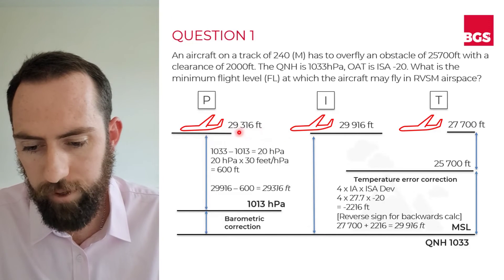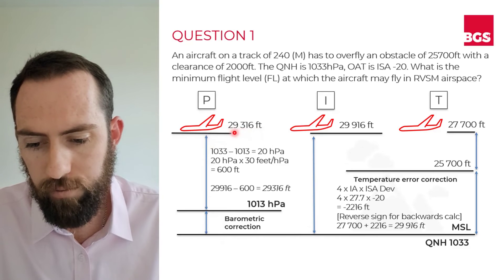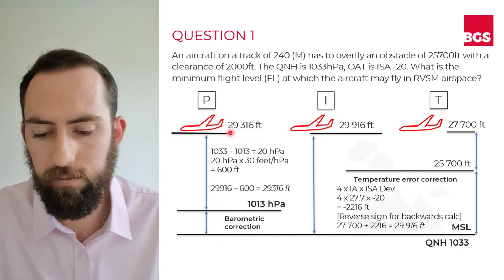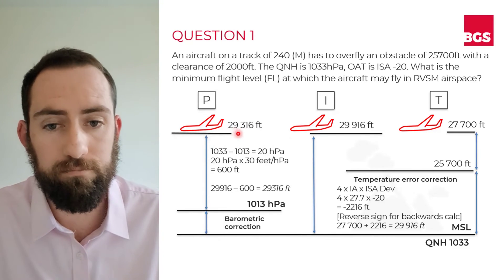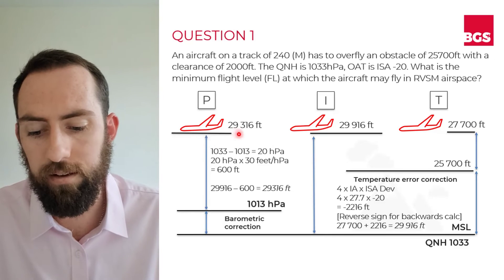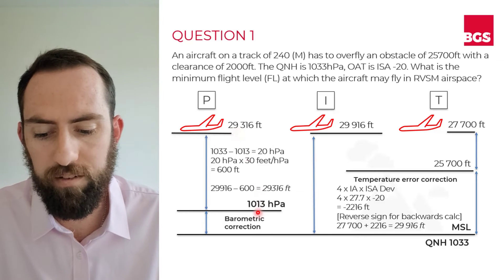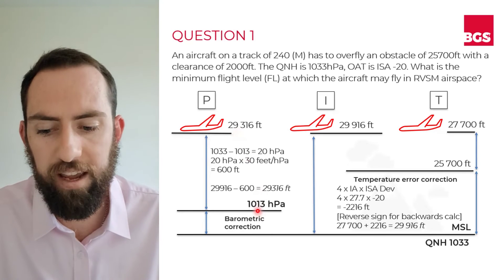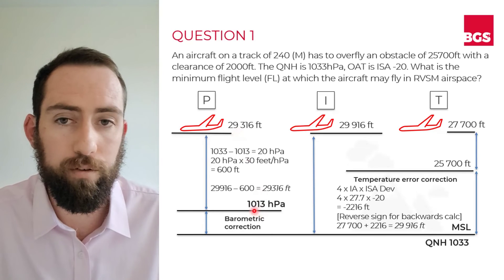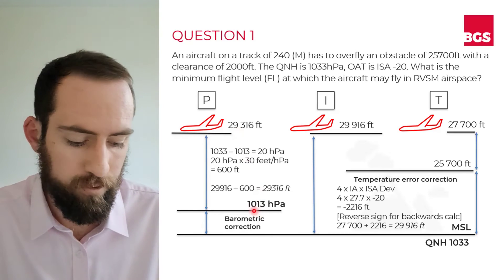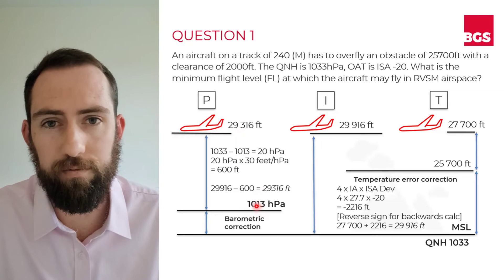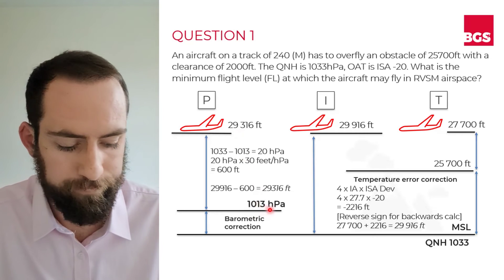So what does this figure mean? Basically, 29,316 feet would have to be showing on our altimeter at a minimum, with 1013 set, in order for us to clear that mountain with 2,000 feet to spare.